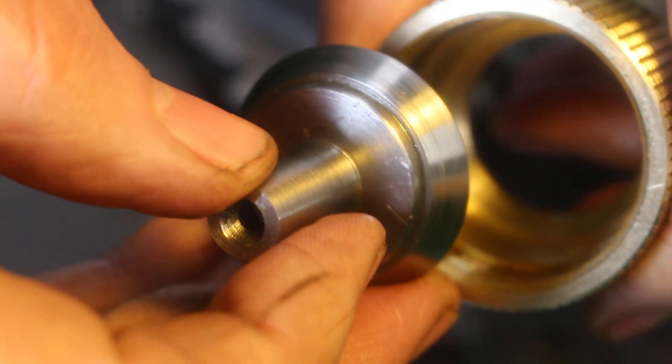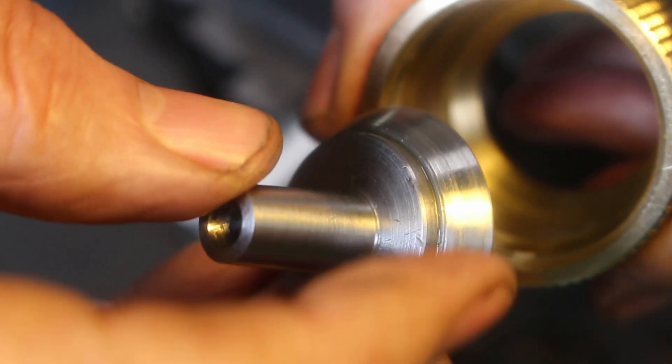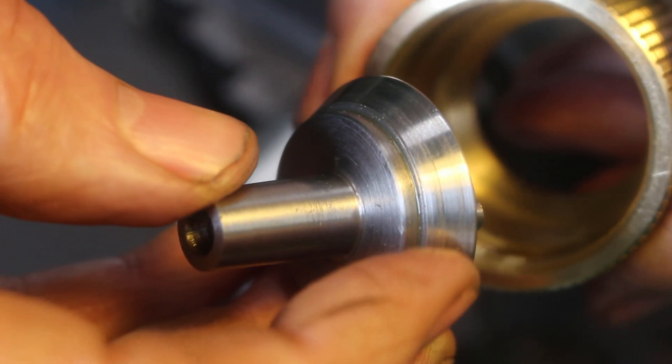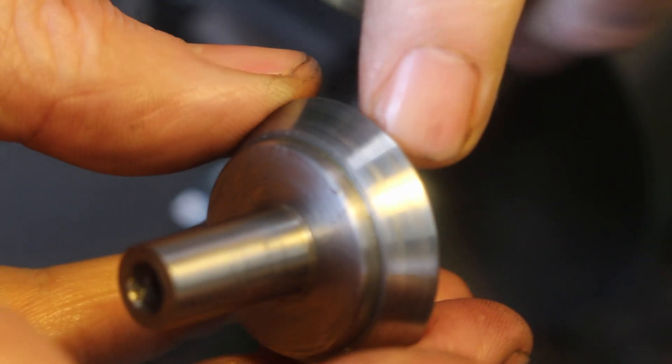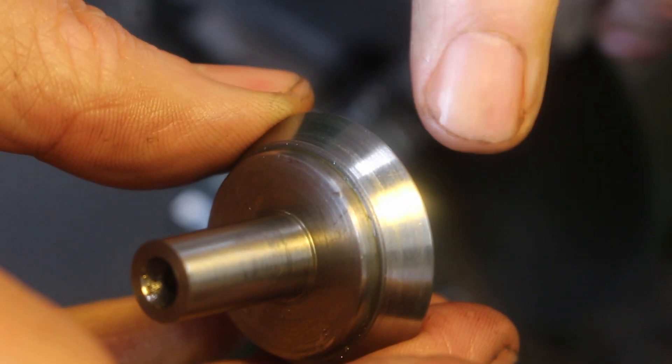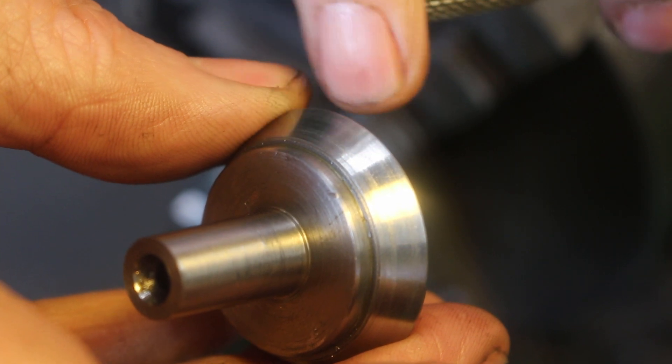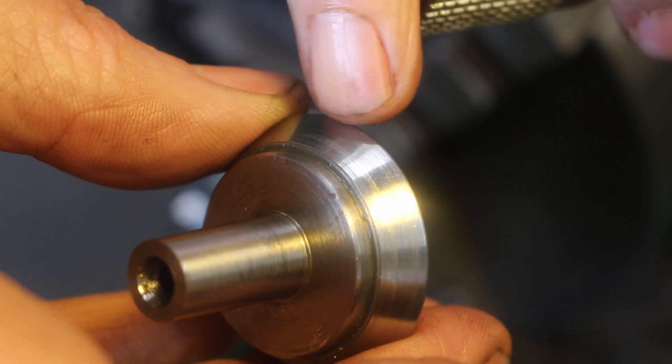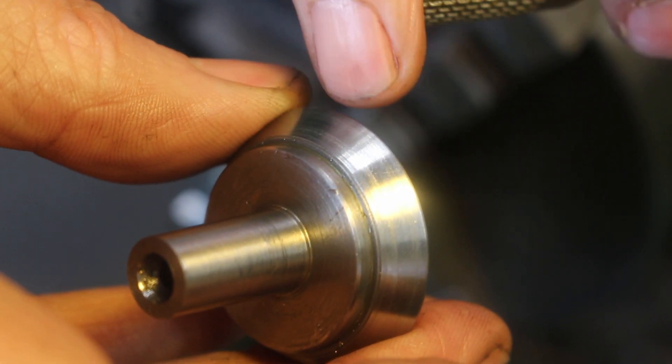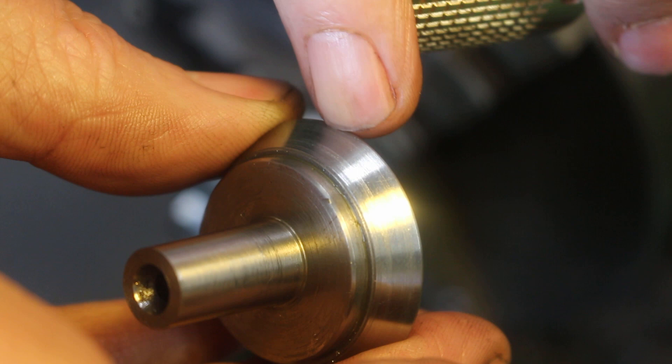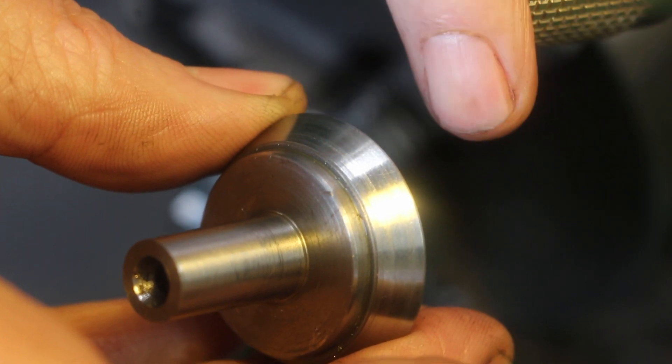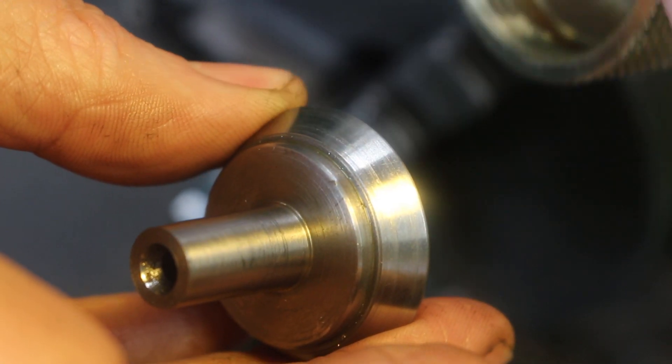One thing I wasn't particularly happy with was the taper on the chuck carrier and the matching taper on the inside of the collar. When you get a good look at this, there are two lines of contact - a heavier line at the front and a fainter line towards the rear - showing that the contact between the two surfaces is not matching perfectly.